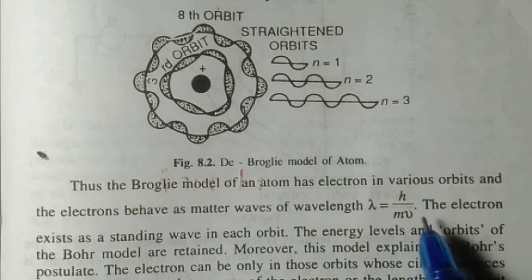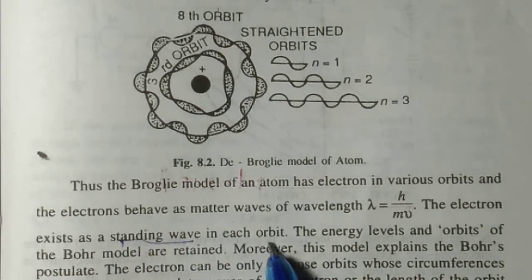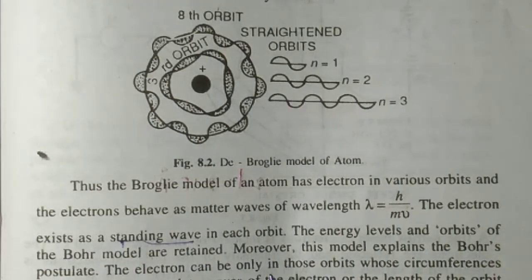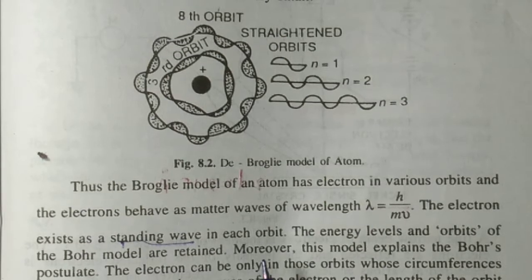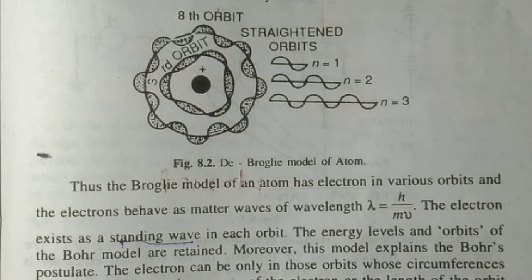Electrons behave as matter waves of wavelength λ = h/mv. The electron exists as a standing wave in each orbit. The energy levels and orbits of Bohr's model are retained. Moreover, this model explains Bohr's postulates.